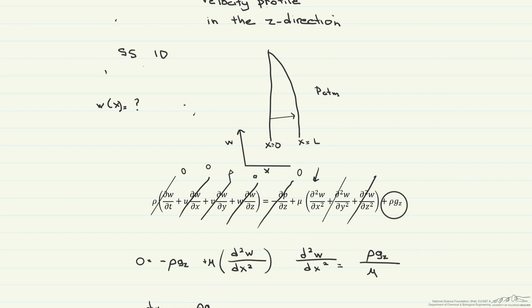So if we look at the first part, x equals zero, because it's a stationary plate, due to no slip conditions, w has to also equal zero.